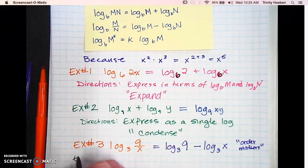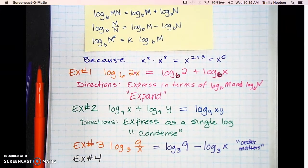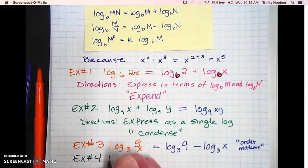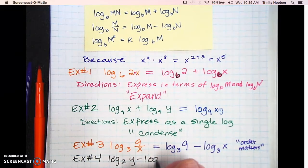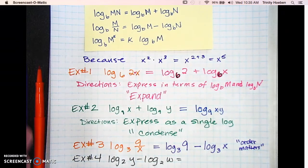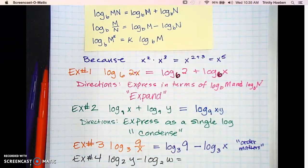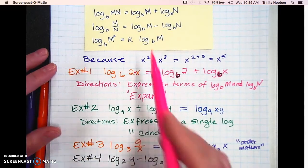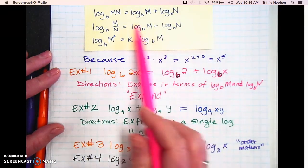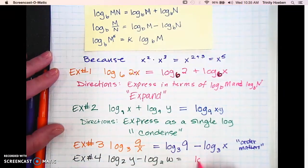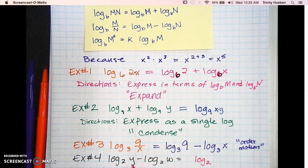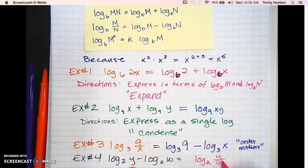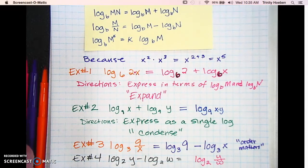Example number four: log base two of Y minus log base two of W. Since you're starting with two terms, you condense it down to one term using law two, going from the right side of the equal sign to the left side. They're both log base two, so write log base two. And since order matters with subtraction and division, Y goes in the numerator and W in the denominator: log base two of Y over W.